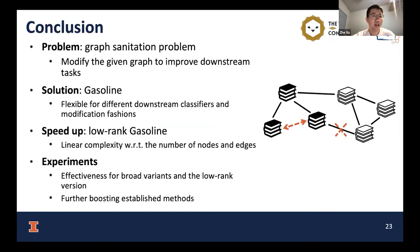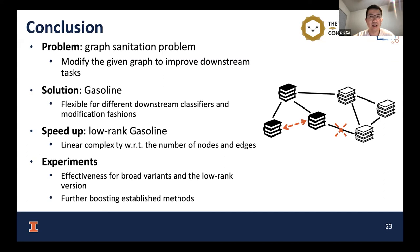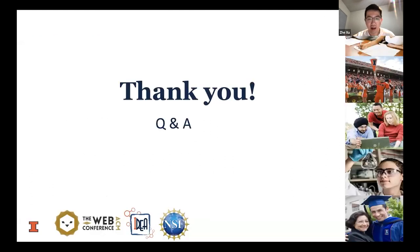In conclusion, we propose a general problem named the graph sanitation problem to modify a given graph and improve a variety of downstream tasks. For node classification, we propose a specific solution GASOLINE, which is flexible for different downstream classifiers and provides various modification fashions. We also provide a speedup version, low-rank GASOLINE, which enjoys linear complexity with respect to the number of nodes and edges. We conduct comprehensive experiments showing the effectiveness of all variants including the low-rank version, and show that our method can further boost established defense methods.